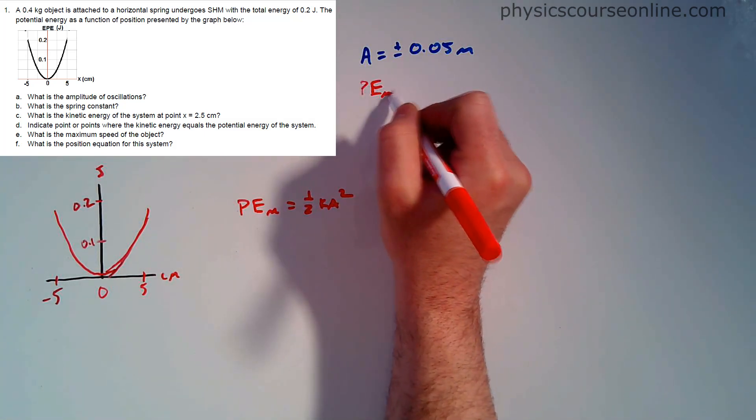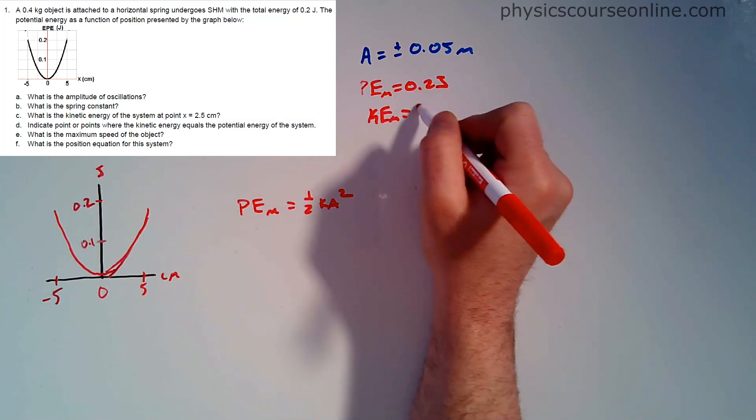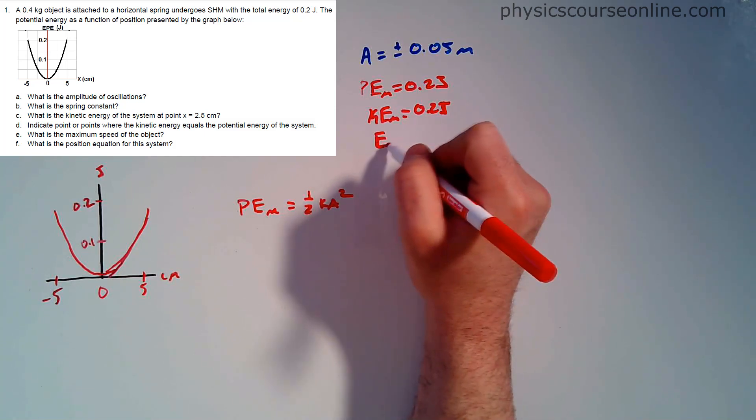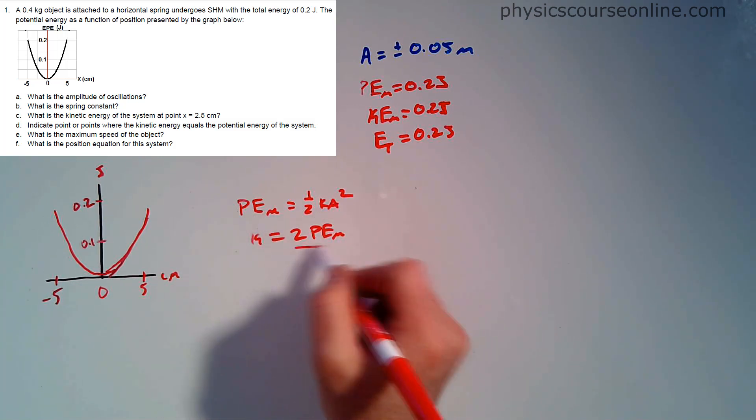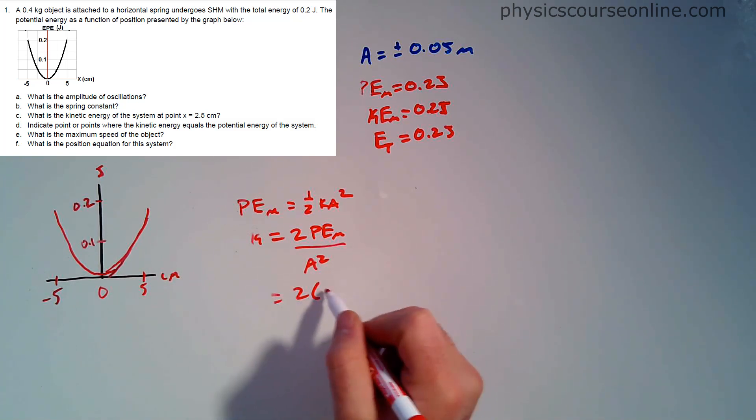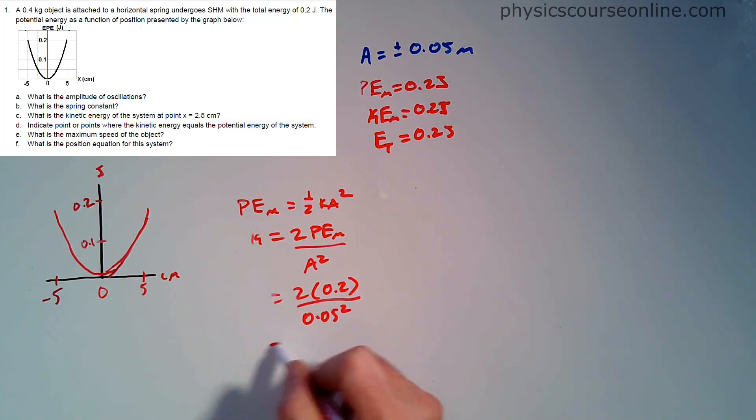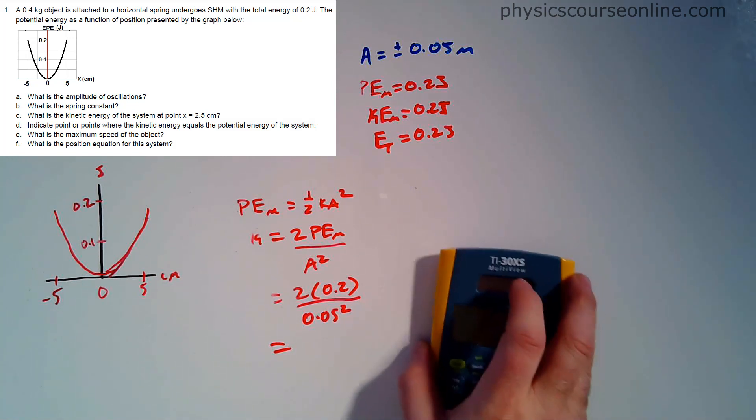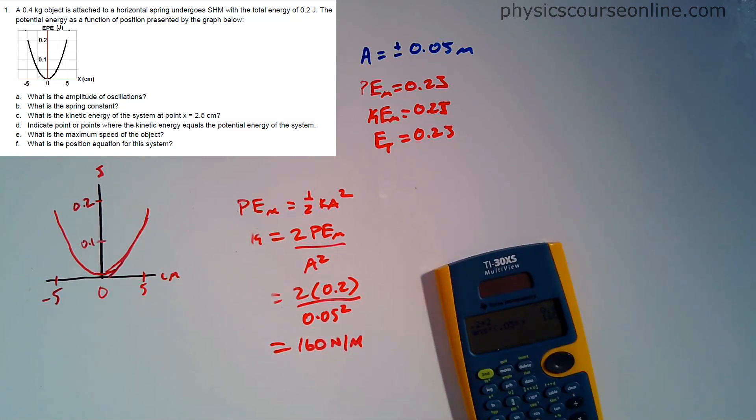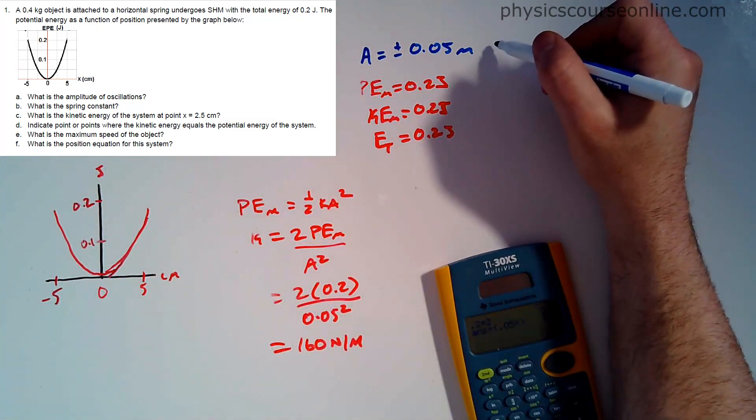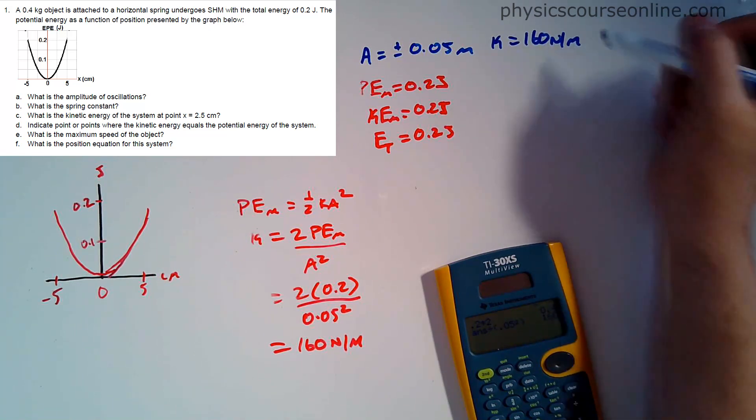So we can say PE max is one-half kA squared. We can solve for k because we know the energy of the system is 0.2 joules. PE max is 0.2 joules, which equals the total energy. K equals 2 PE max divided by A squared. So 2 times 0.2 divided by 0.05 squared equals 160 newtons per meter.